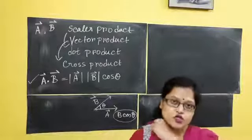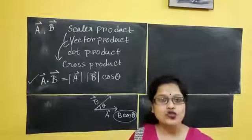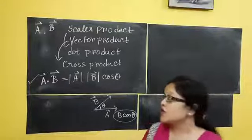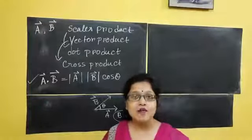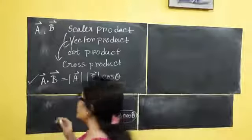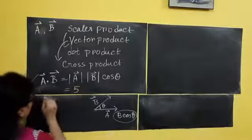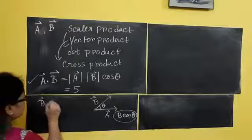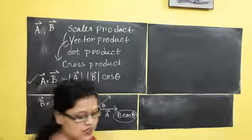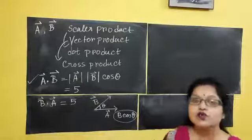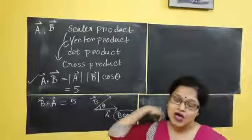There are some properties of this scalar product you should know. First of all, the scalar product is always commutative. Means whether you do A dot B or B dot A, both will give the same value. If A dot B gives 5, then B dot A also gives 5. So the first property is that scalar product is commutative.